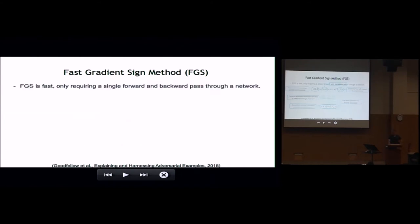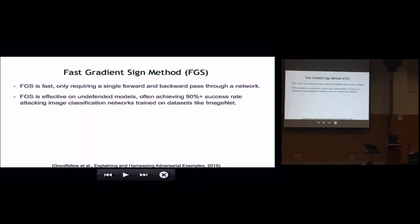Fast gradient sign is fast — it only requires a single forward and backward pass through the target network. It's a white-box attack, so you do have to have the network parameters to run it. It's also very effective on undefended models. The original fast gradient sign work showed it could generate successful attacks over 90% of the time on state-of-the-art ImageNet classifiers.